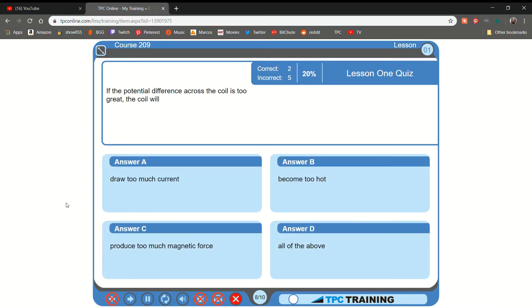If the potential difference across the coil is too great... The coil will... A. Draw too much current... B. That is not correct.